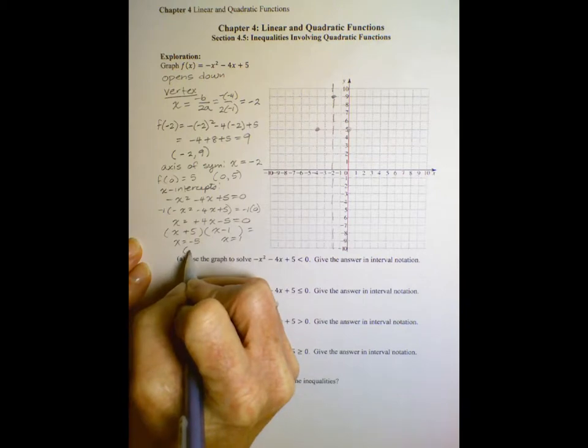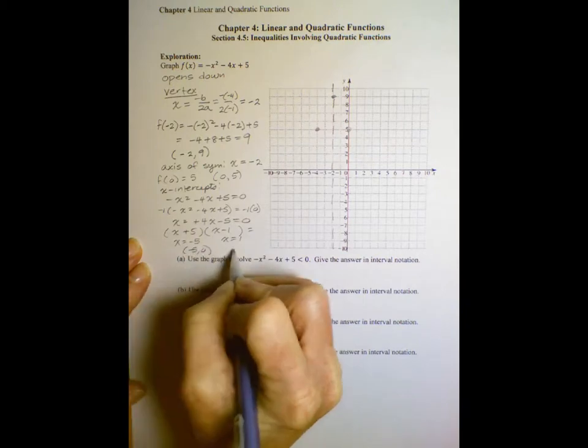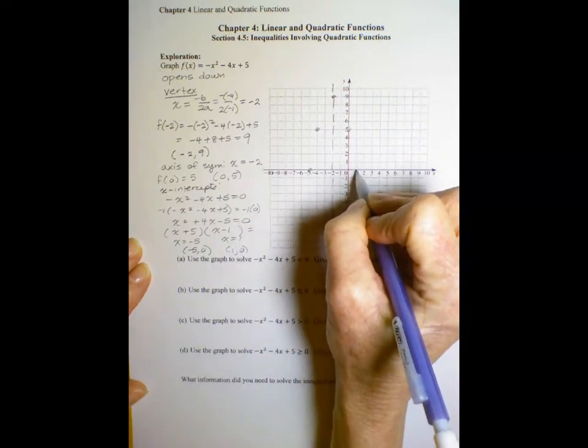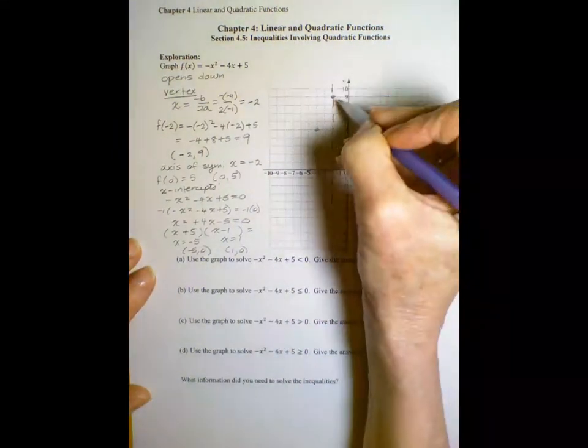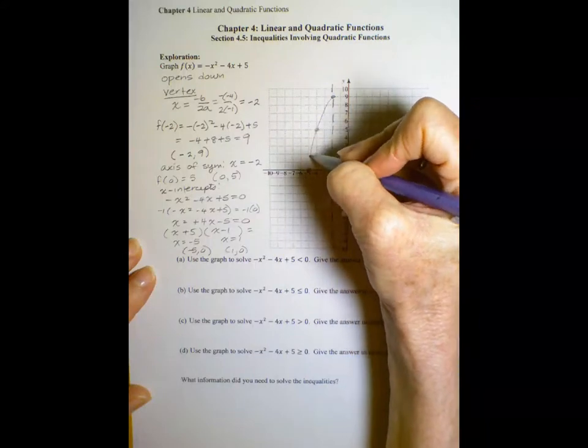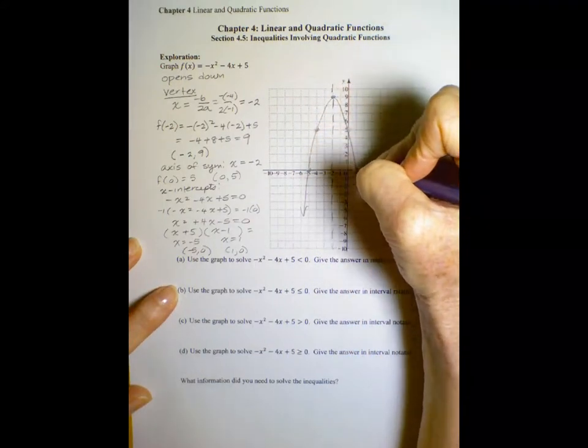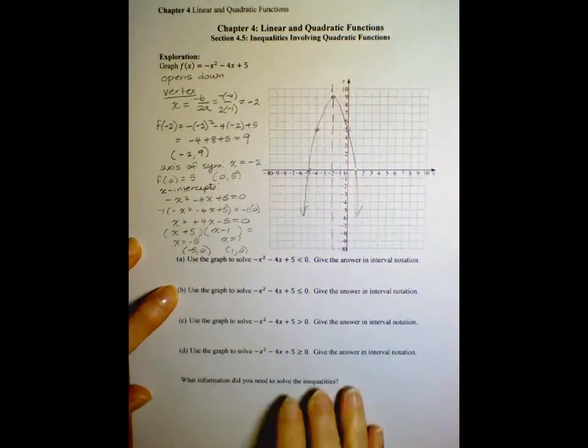So x equals negative 5 and x equals 1. These are our x-intercepts. Negative 5, 0 and 1, 0. Negative 5, 0 and 1, 0. So now we can sketch our graph.